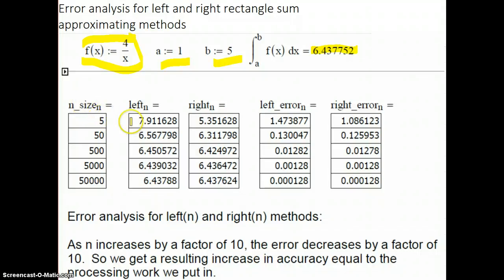I went in a program called Mathcad and I made up this chart. For n size of 5, your left sum is 7.9 something, your right sum is this. The error of the left is the difference between this number and the actual true value. So when you subtract those two, these two right here, and take the absolute value, you get this number here.